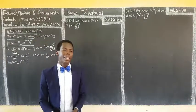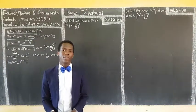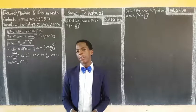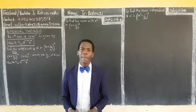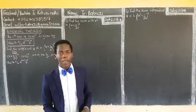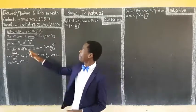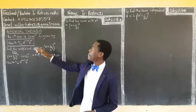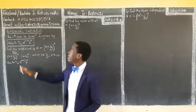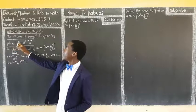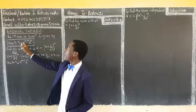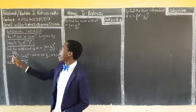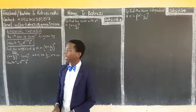We are going to see how we get the terms of a binomial expansion. The r-th term of (a + b)^n is given by the formula: U(r+1) = C(n,r) · a^(n-r) · b^r, where r is the term we are looking for.